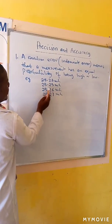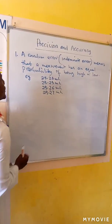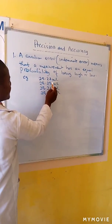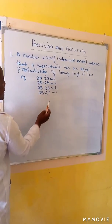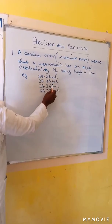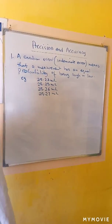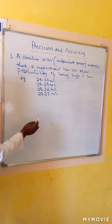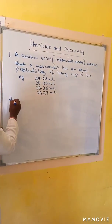The first three numbers are the same, so these are certain digits, but the last one is an estimate. So this is where the random error can occur in trying to estimate the last value.